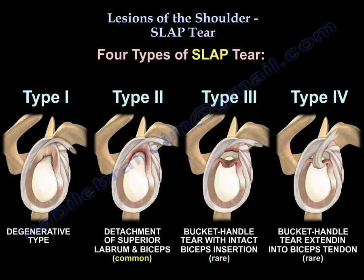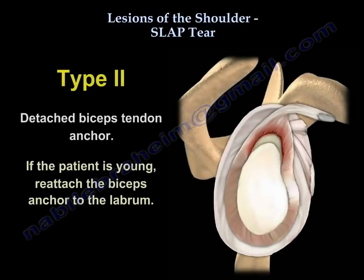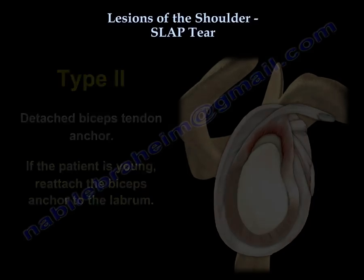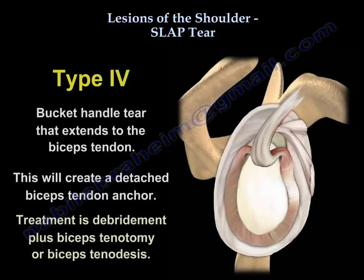SLAP tear may have four types or more. Type 1 is fraying of the labrum — you debride that. Type 2 is a detached biceps tendon anchor; if the patient is young, you reattach the biceps tendon anchor to the labrum. Type 3 is a bucket-handle tear with intact biceps insertion — treatment is debridement of the bucket handle. Type 4 is a bucket-handle tear that extends to the biceps tendon, creating a detached biceps tendon anchor — treatment is debridement plus biceps tenotomy or tenodesis.